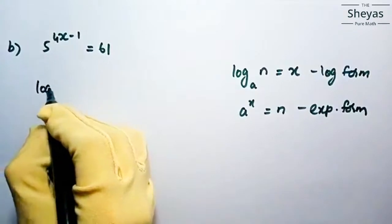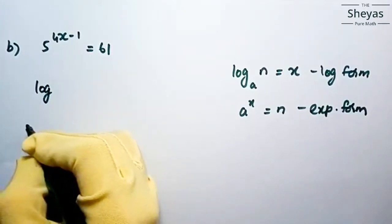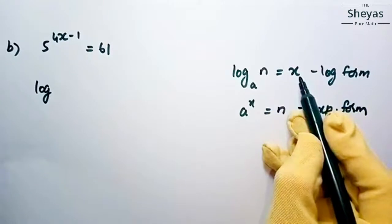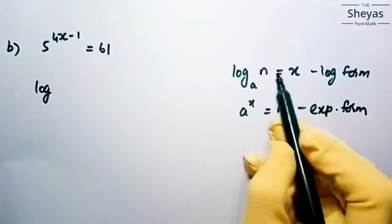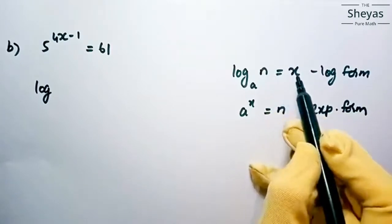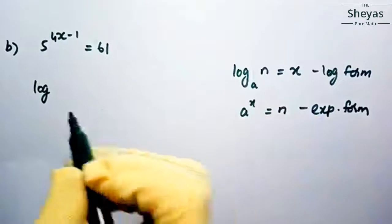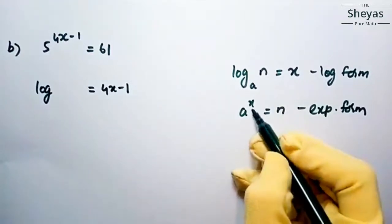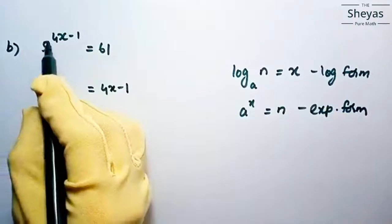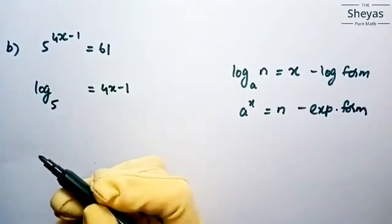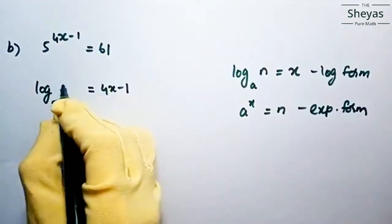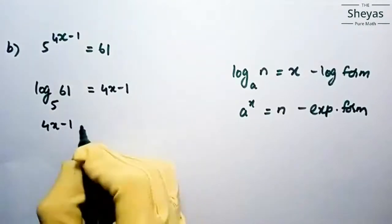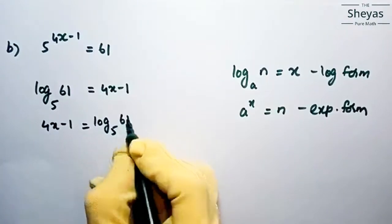Write down log. What is in the power will go to the other side of the equation — what is in the power of the exponential form goes to the other side of the equal-to sign in the logarithmic form. So 4x minus 1 goes to the other side. What is here will be in the base — so base 5 — and then 61 comes near the log. So both these forms are the same; I am just rewriting the equation.